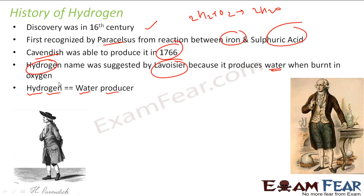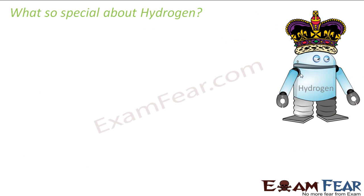So we've studied what hydrogen is, its uses, and its history. The next question is: we have so many elements in the periodic table — more than a hundred elements — so what is so special about hydrogen that we have one full chapter devoted to it? We don't have separate chapters for sulfur, phosphorus, or sodium. But for hydrogen, we do. There has to be something special. What is special about hydrogen that warrants a separate chapter?